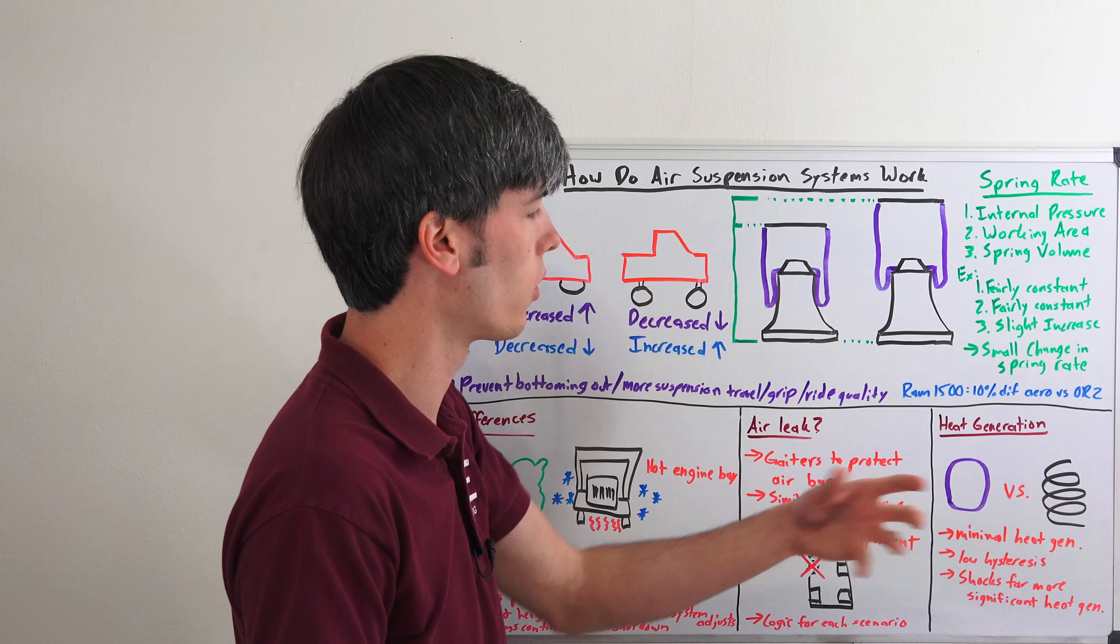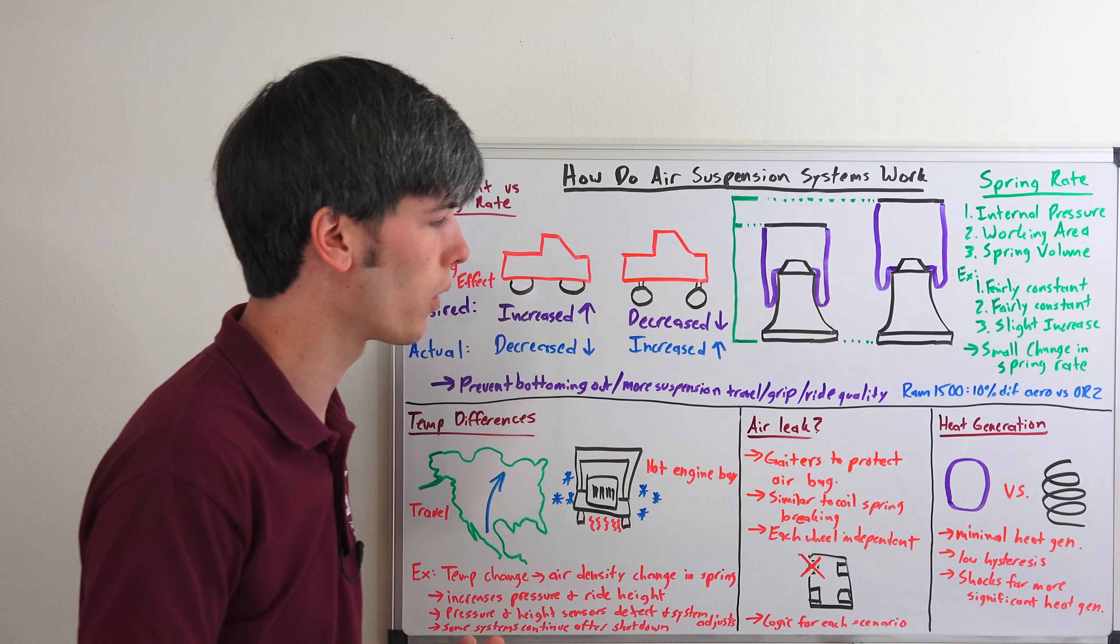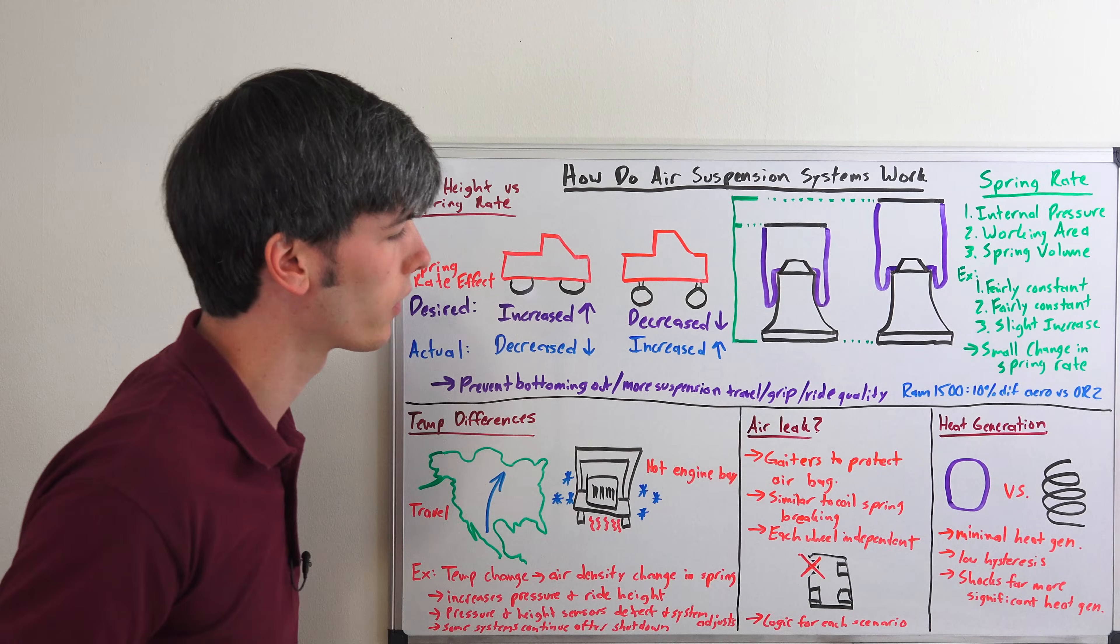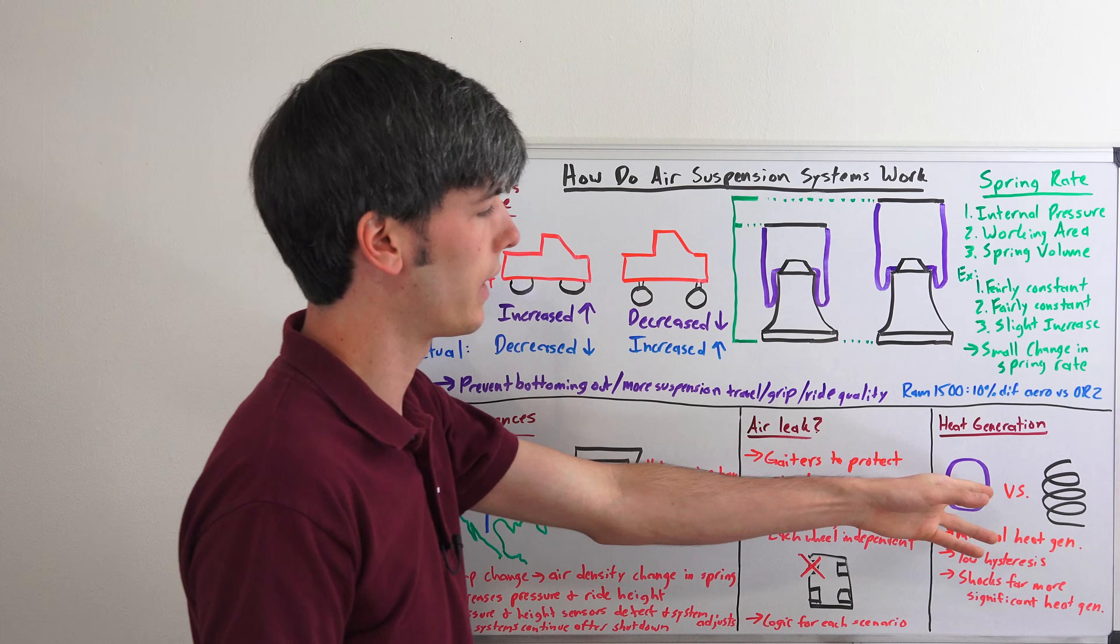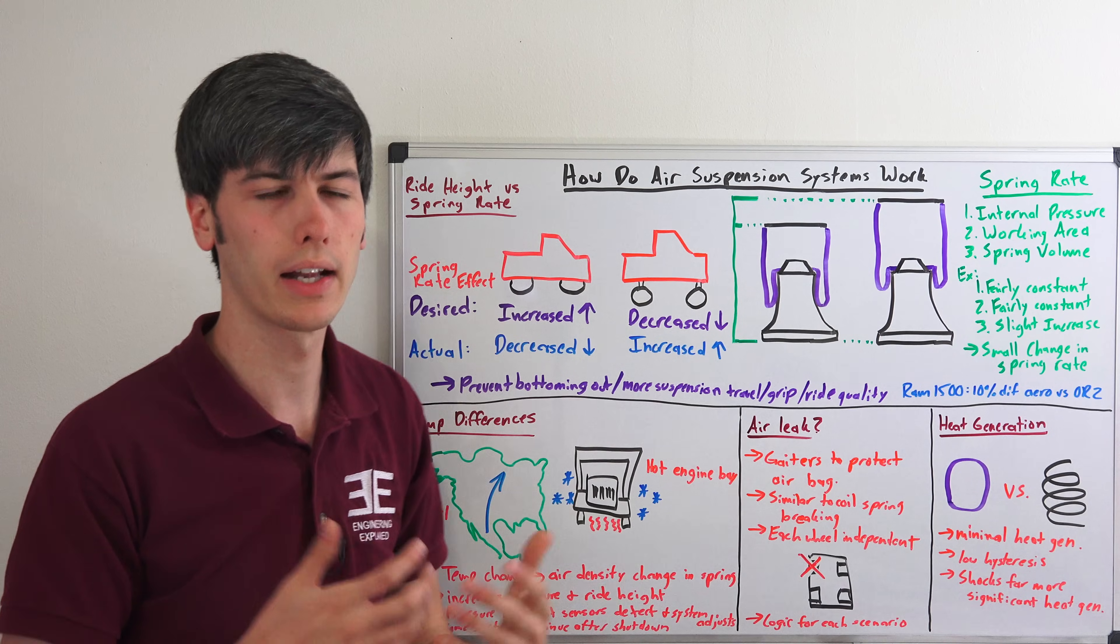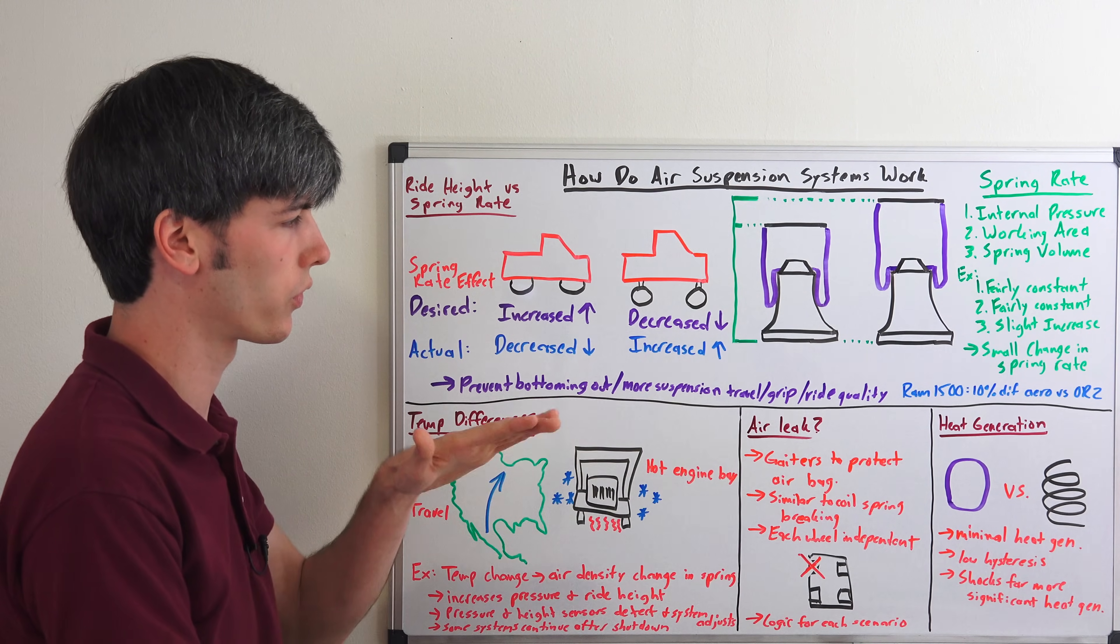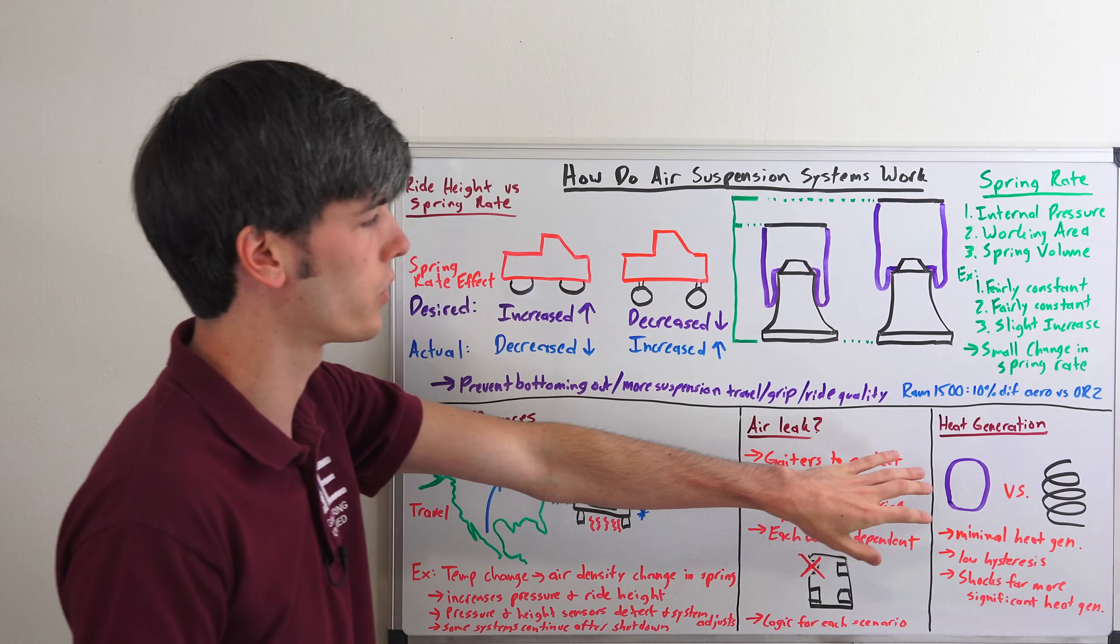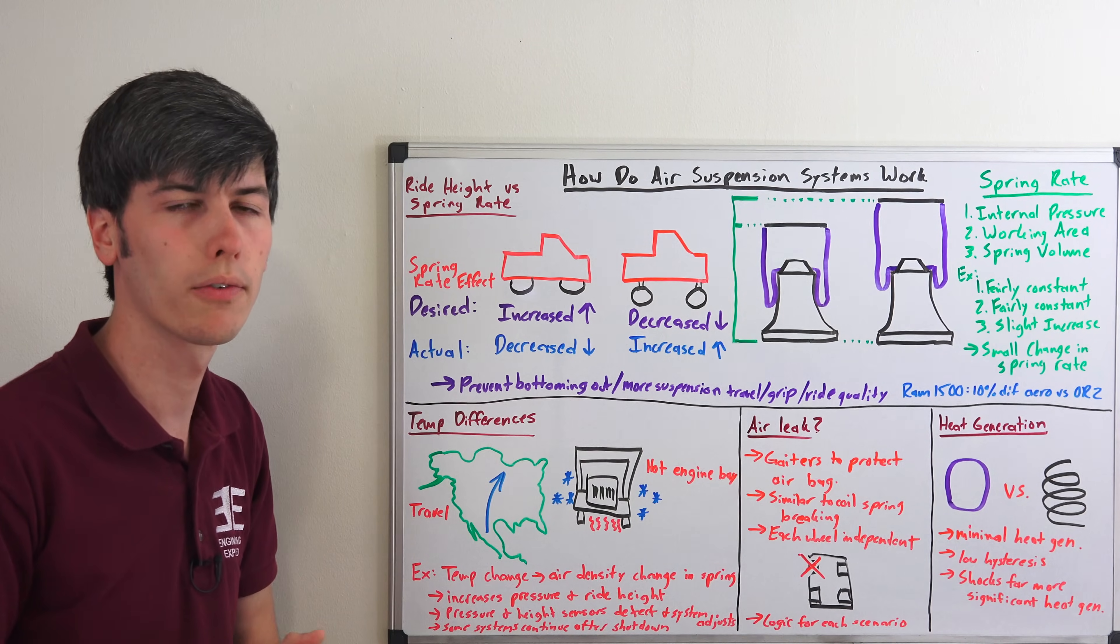So one final question I had for the Ram guys, which is a bit silly and probably too in-depth, but is there a difference in heat generation for this air spring versus a steel coil spring? Because I wonder if the hysteresis of this air spring bouncing up and down is going to generate enough heat to make any difference. Basically they said it's very similar in heat generation versus a coil spring. Obviously the vast majority of that heat generation of your suspension is going to occur through the shocks, which their job is of course to dissipate those bumps and transform that energy into heat. So not a major difference in heat generation of an air spring versus a coil spring.